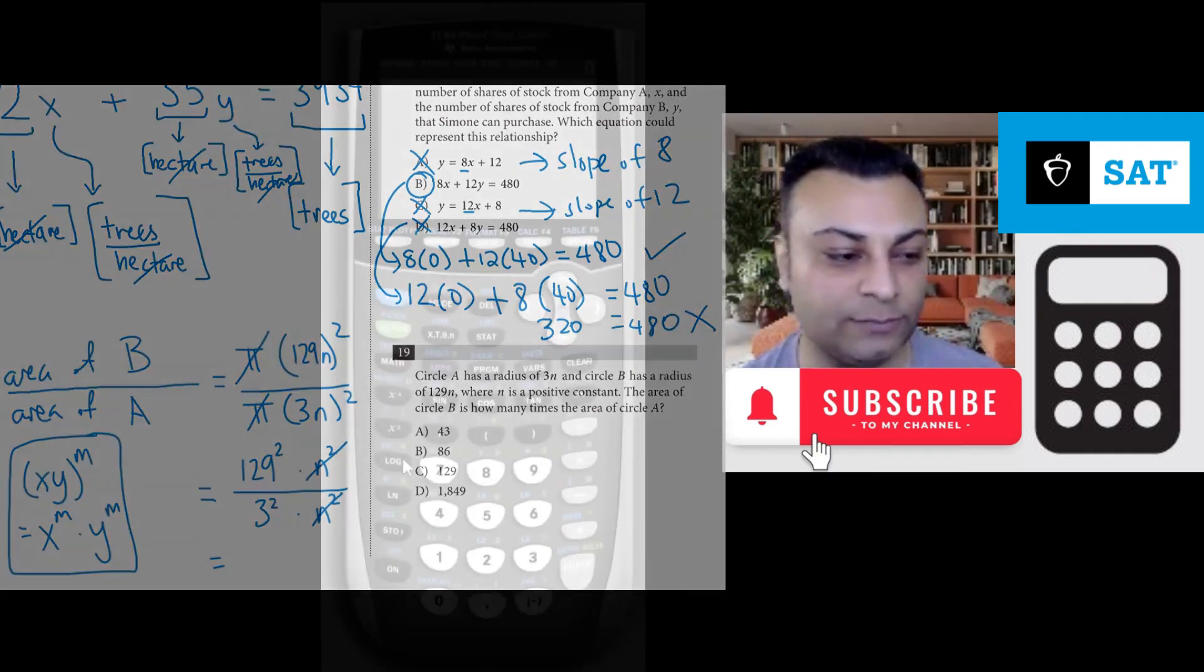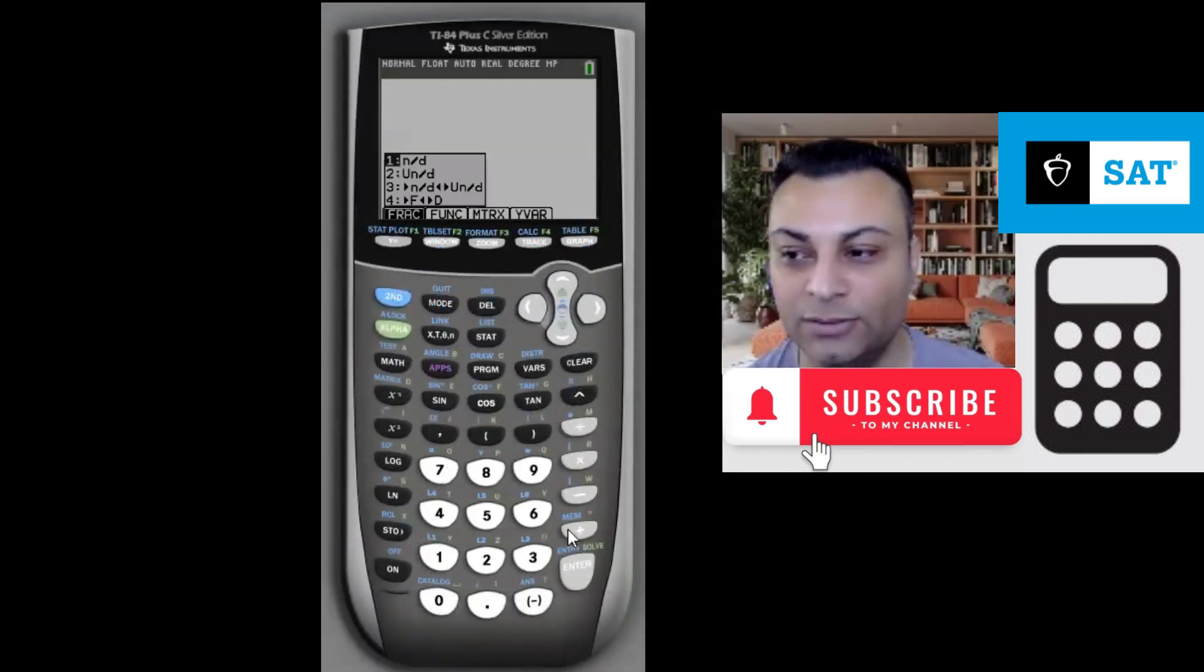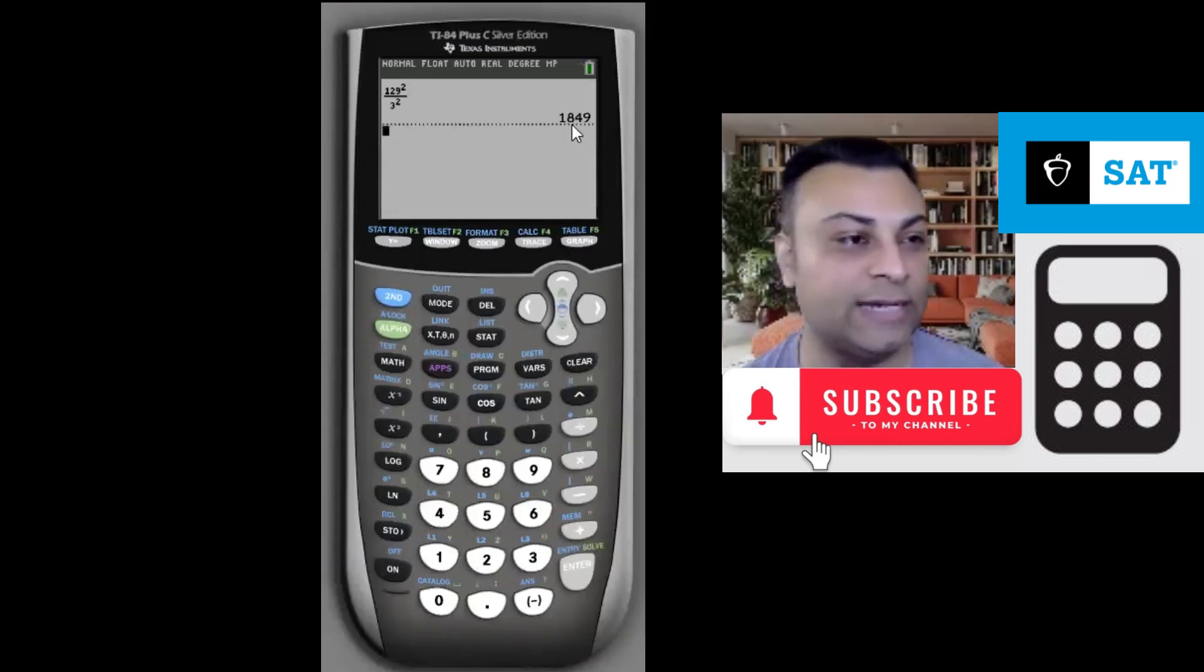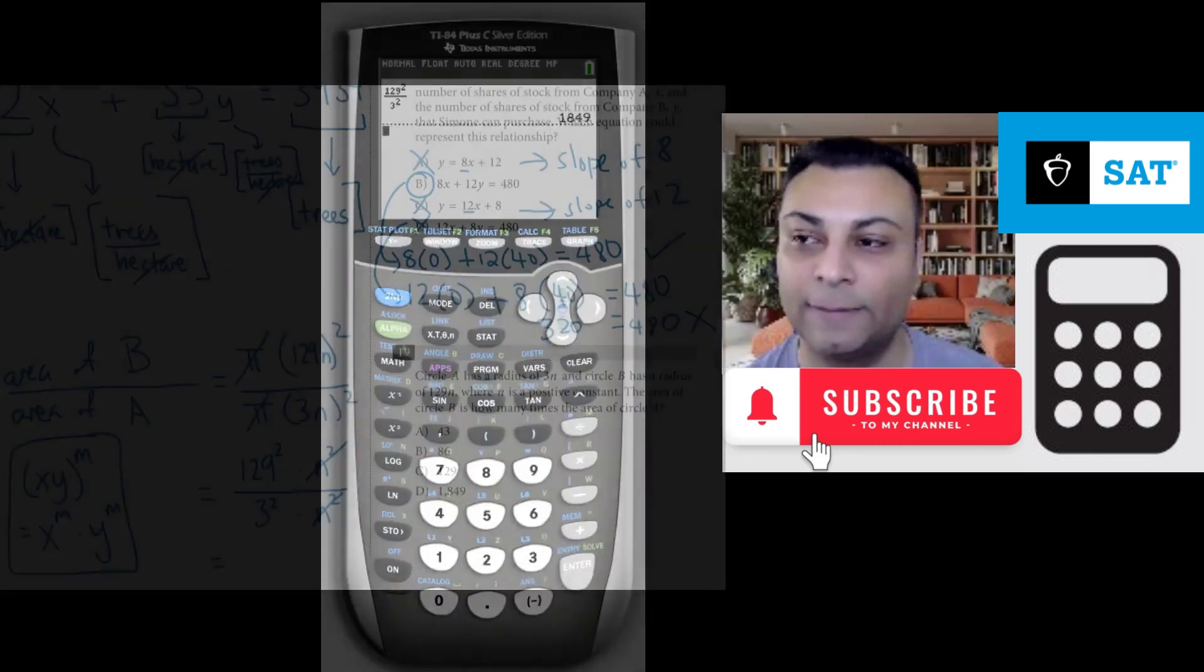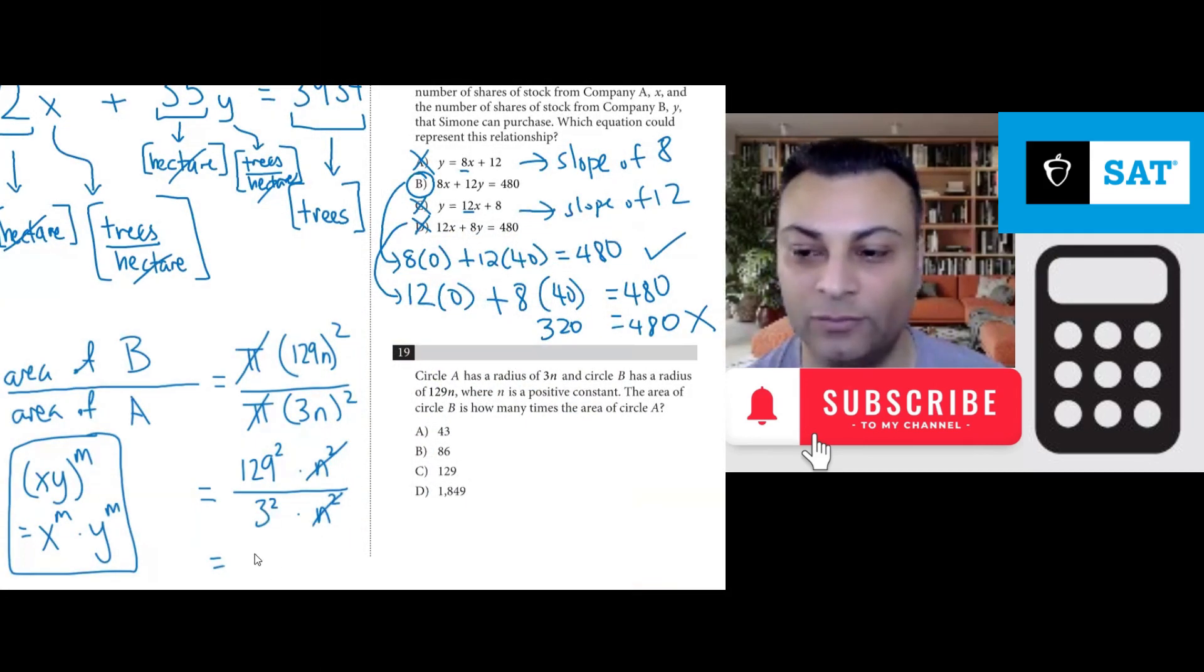and for that let's get the calculator, let's make a fraction, 129 squared over 3 squared, and you get the answer of 1849. So we have 1849, which is option D.